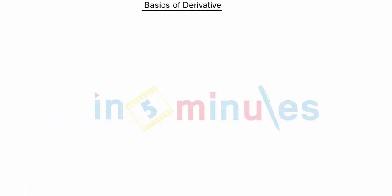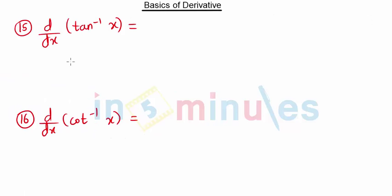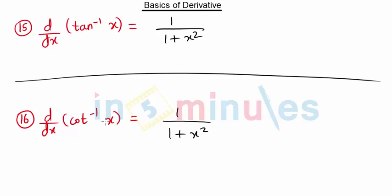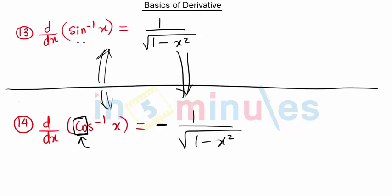Similarly, for tan⁻¹ x and cot⁻¹ x: the derivative of tan⁻¹ x is 1 upon (1 + x²). The derivative of cot⁻¹ x remains the same — 1 upon (1 + x²) — but since it starts with 'co', it is minus. As you can see, sine and cos inverse form a derivative pair, and tan and cot inverse form a derivative pair.